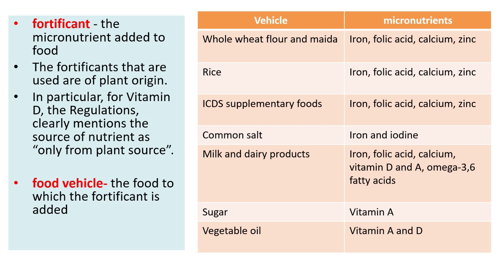Examples of food vehicles and their micronutrients: whole wheat flour and maida — iron, folic acid, calcium, and zinc; rice — iron, folic acid, calcium, and zinc; ICD supplementary foods — iron, folic acid, calcium, and zinc; common salt — iodine and iron; milk and dairy products — iron, folic acid, calcium, vitamin D and A, and omega-3/6 fatty acids; sugar — vitamin A; vegetable oil — vitamins A and D.